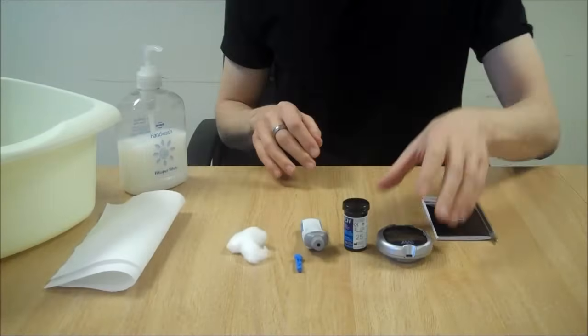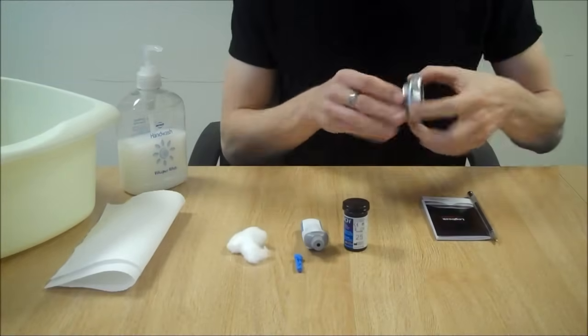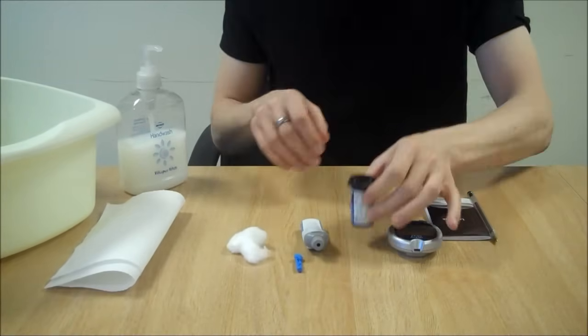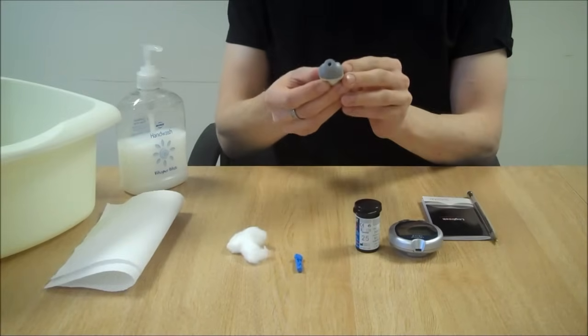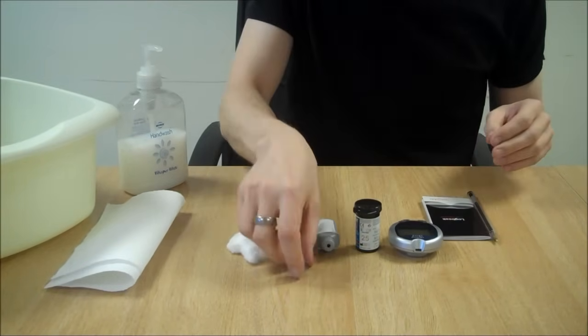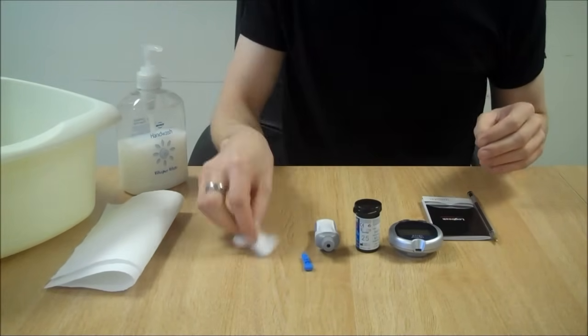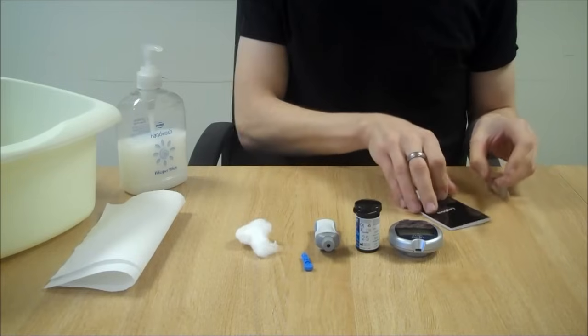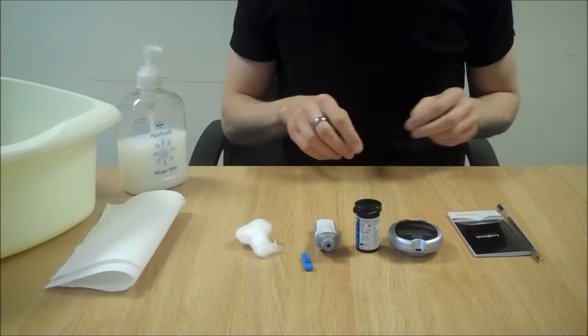Prepare your kit. You will need a meter, test strips, a finger pricker or lancing device, a lancet, cotton wool, and a monitoring diary to record the results.